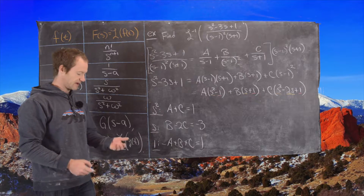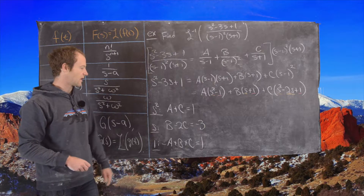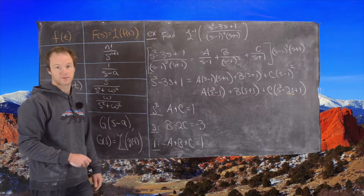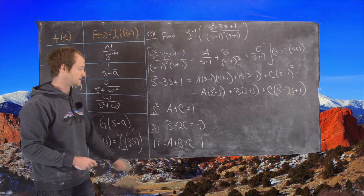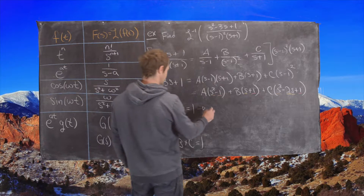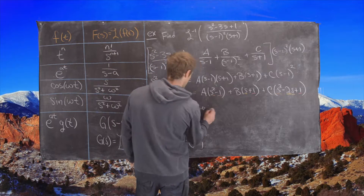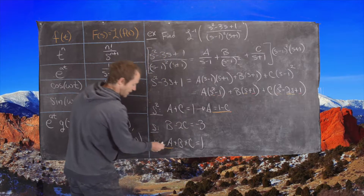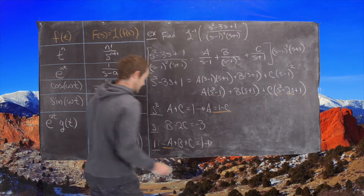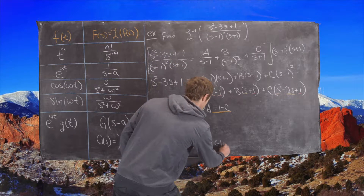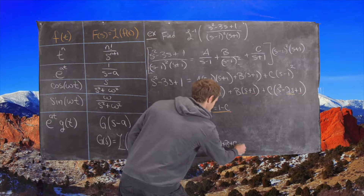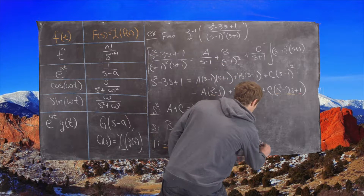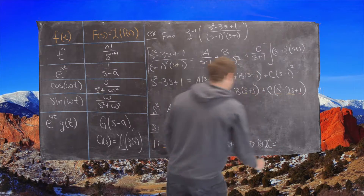Notice the second equation involves only B and C. We can use the outer two equations to get another equation in just B and C. From the first equation, we can rewrite A as 1 minus C, and plug that into the third equation. That gives us C minus 1 plus B plus C equals 1, which simplifies to B plus 2C equals 2.